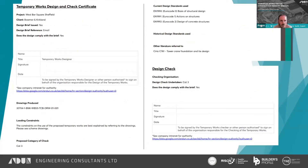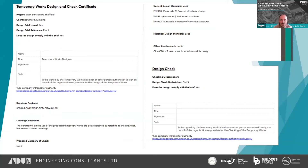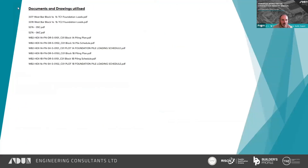As an example of what you're looking for, our standard temporary works design and check certificate should identify the designer, be signed and dated, and refer to the drawings produced with a revision. Loading constraints — if they can be described easily, put them in; if not, reference the drawings. Always include the proposed category of check, the codes used, and other literature referred to. Similarly, for the design check, it should state what level of check has been undertaken and whether it complies with the brief, all filled in and signed off.